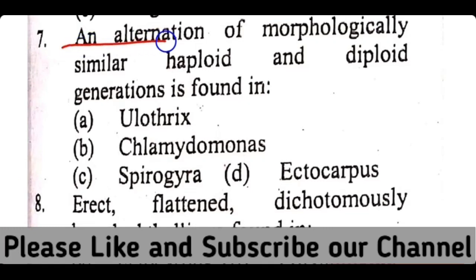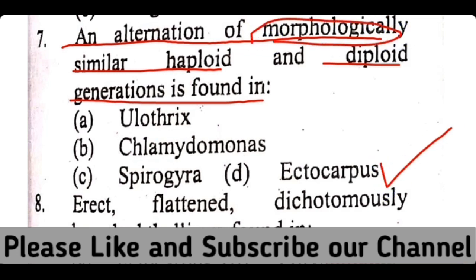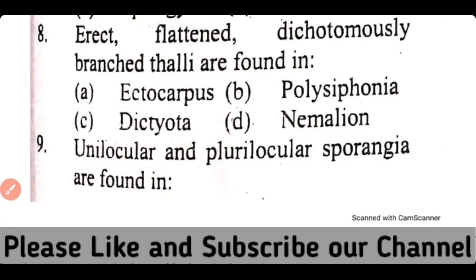Question number 7. An alternation of morphologically similar haploid and diploid generations is found in: Ulothrix, Chlamydomonas, Spirogyra, or Ectocarpus. The correct answer is option D. Ectocarpus shows alternation of morphologically similar haploid and diploid generations.